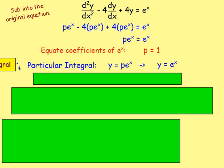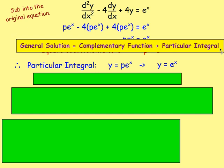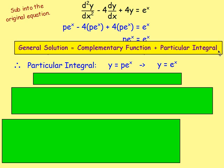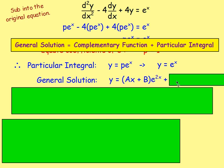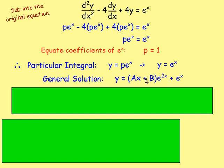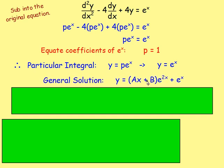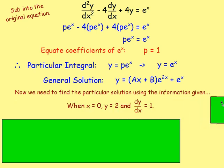The general solution is the sum of the complementary function and the particular integral. So the general solution equals (ax + b)e^(2x) + e^x. That's what we were doing in the last lesson, but now we have additional information to find the constants a and b.